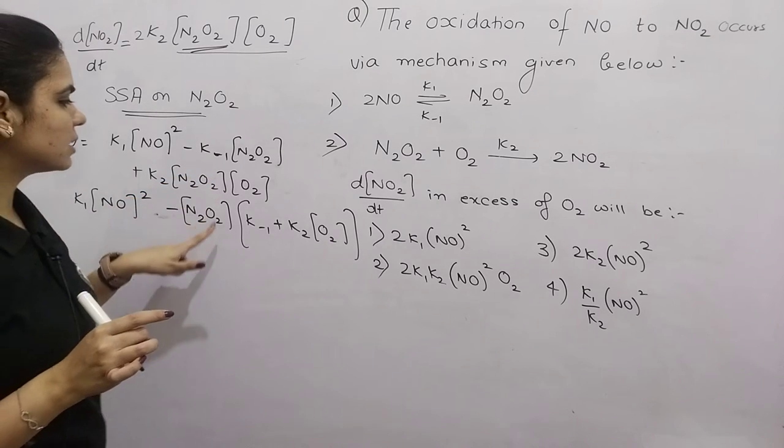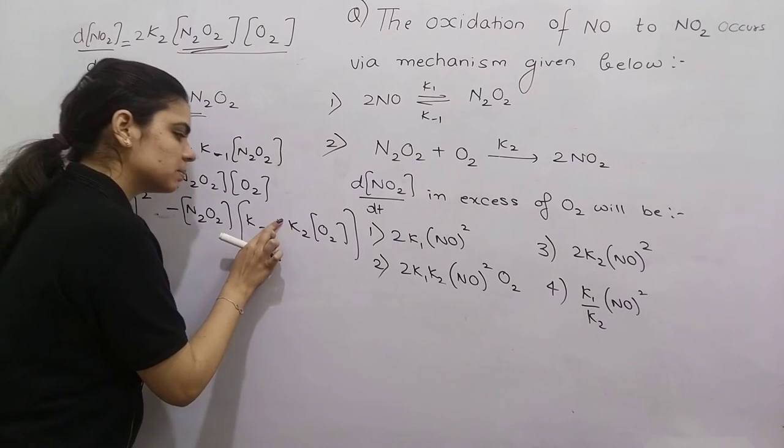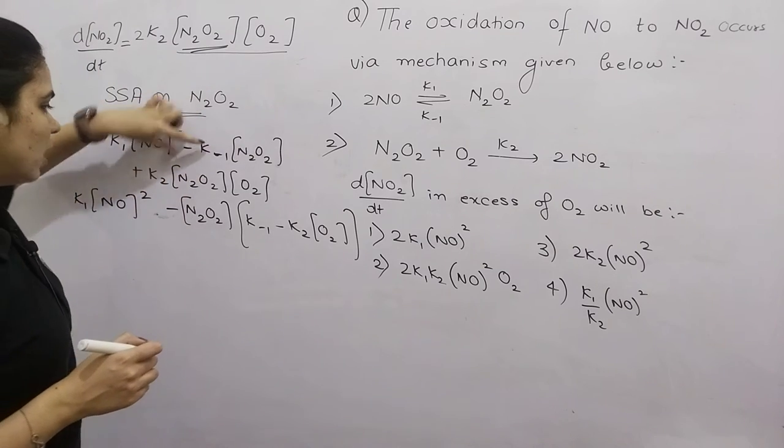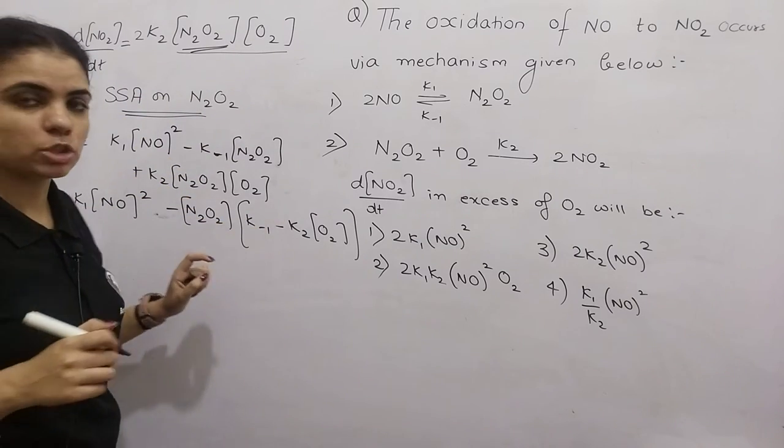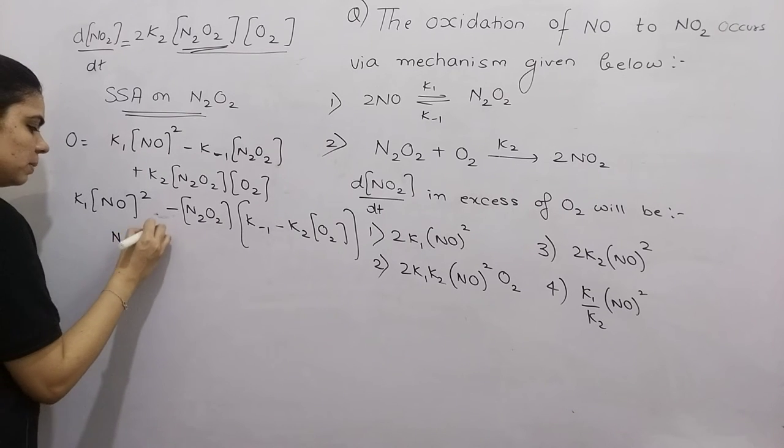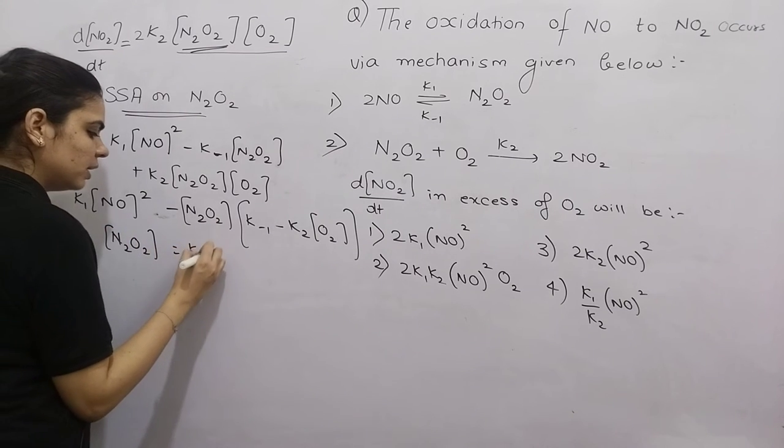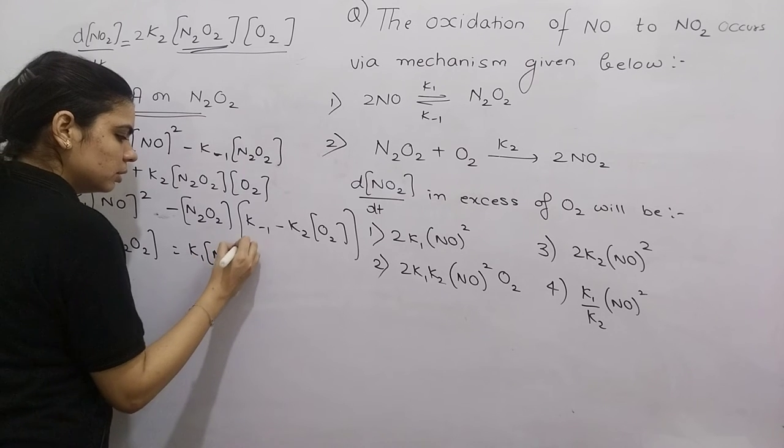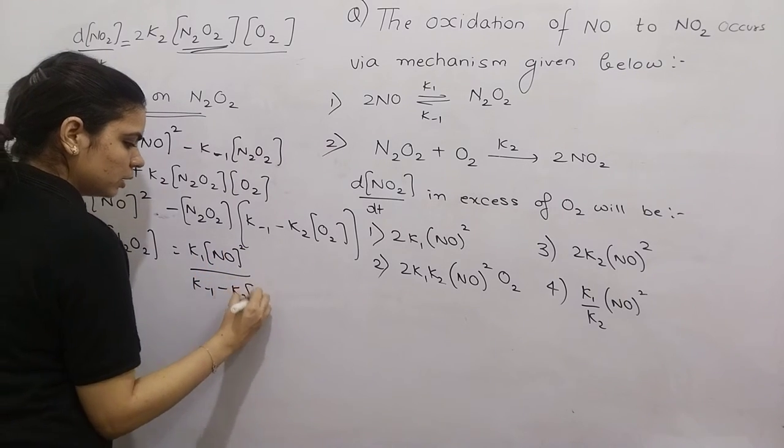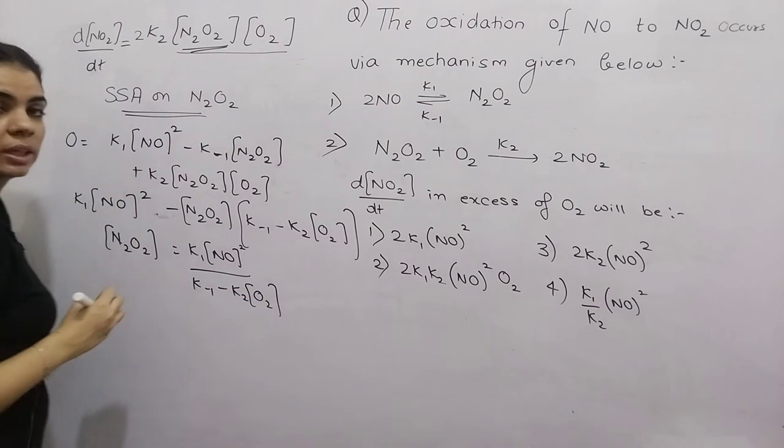Now take N2O2 out. If you take N2O2 common here, the sign changes to plus. Solving gives N2O2 = K1[NO]^2 divided by (K-1 + K2[O2]).